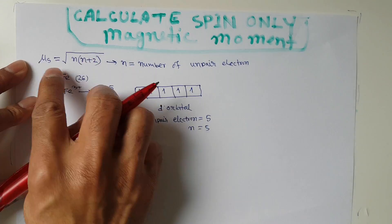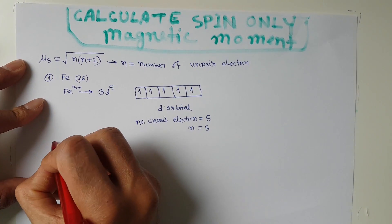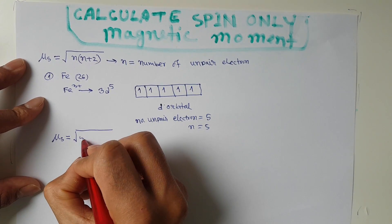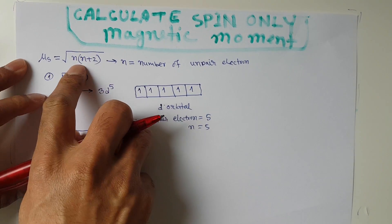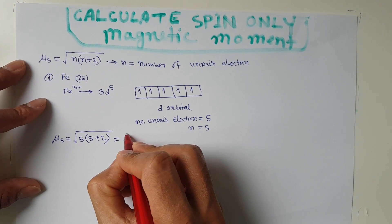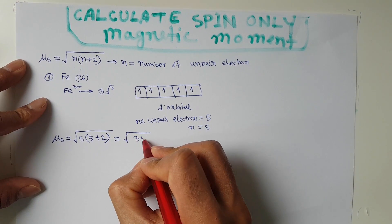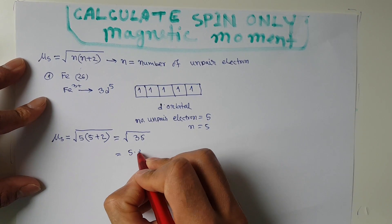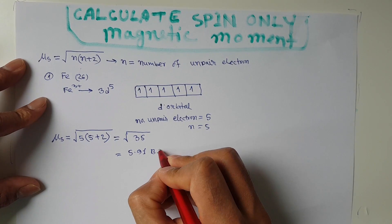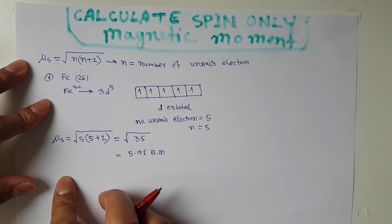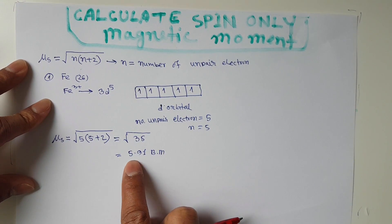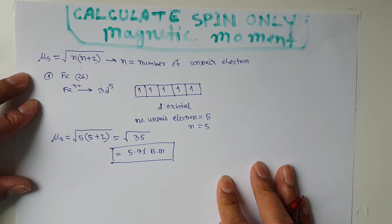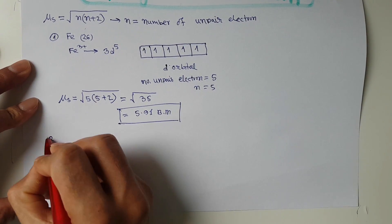With n = 5, the spin-only magnetic moment is μs = √(n(n+2)) = √(5 × 7) = √35. Using a calculator, √35 = 5.91 Bohr magnetons (BM). This is the answer for the first example, Fe³⁺.